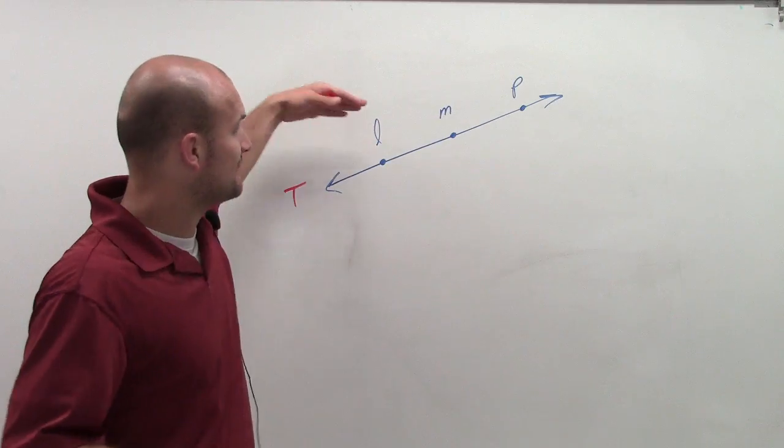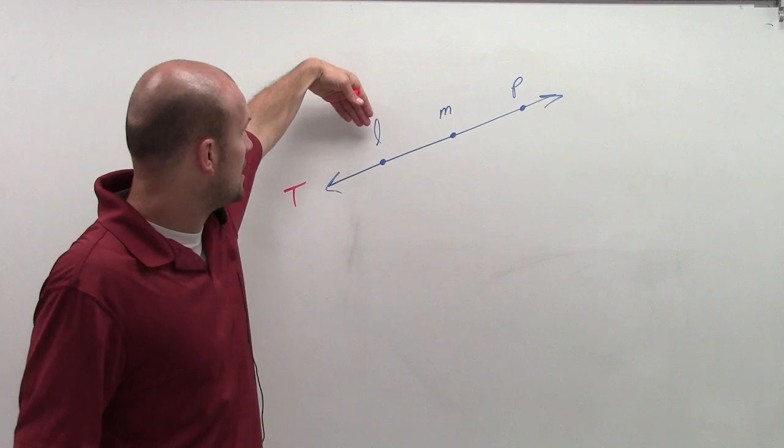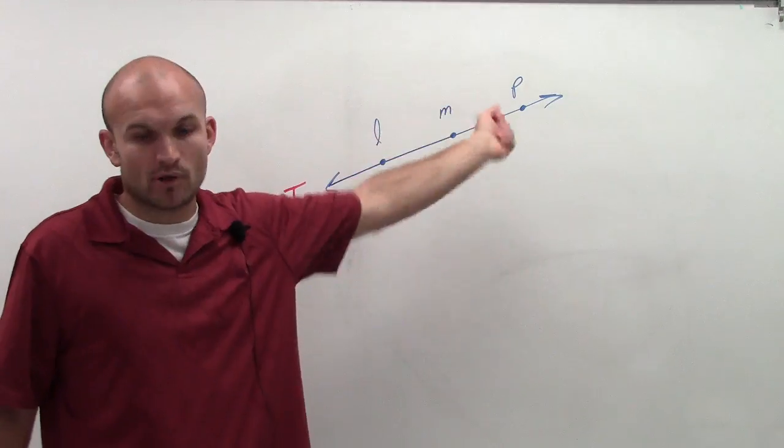On line T, I have three points that are contained on the line: point L, point M, and point P.